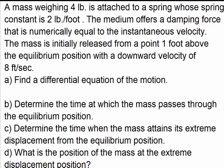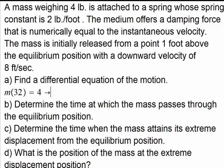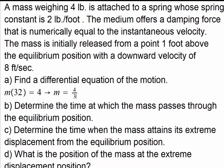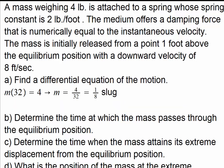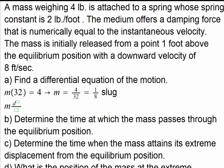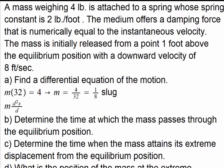We are given the spring constant as 2 pounds per foot, and the mass that weighs 4 pounds is attached to the spring. The damping force numerically equals the instantaneous velocity. We have to find the differential equation of the motion. First, let's determine the mass: in the foot-pound-second system, mass times 32 feet per second squared equals 4 pounds.